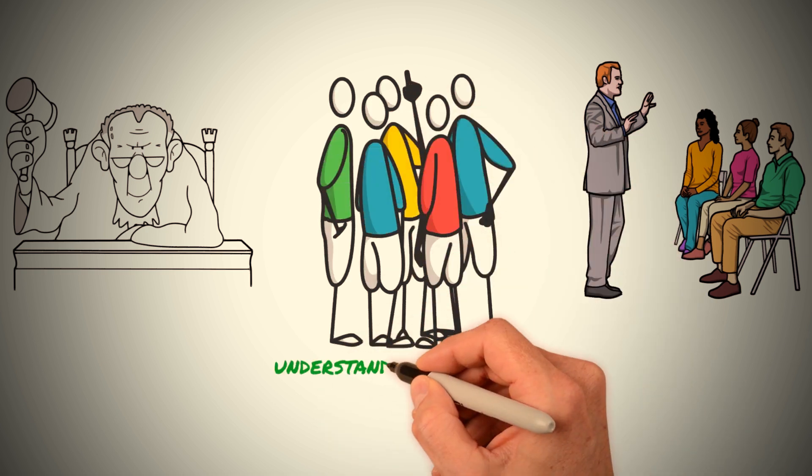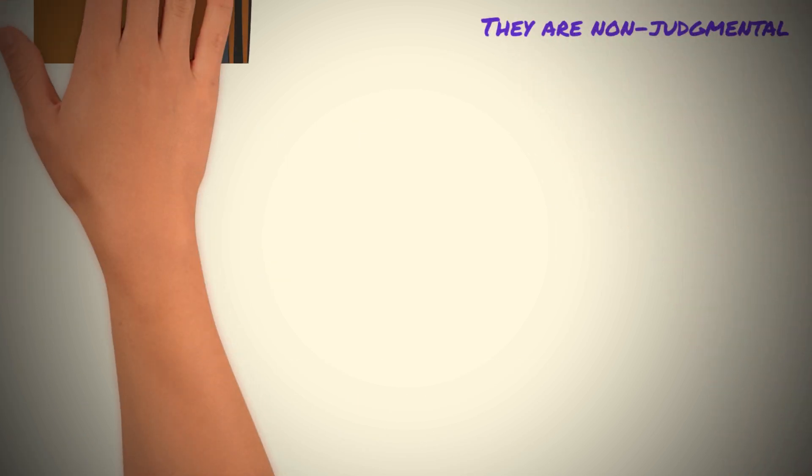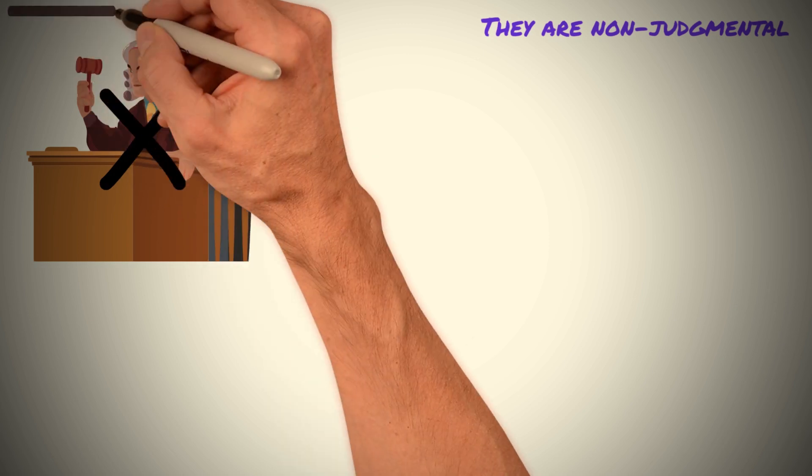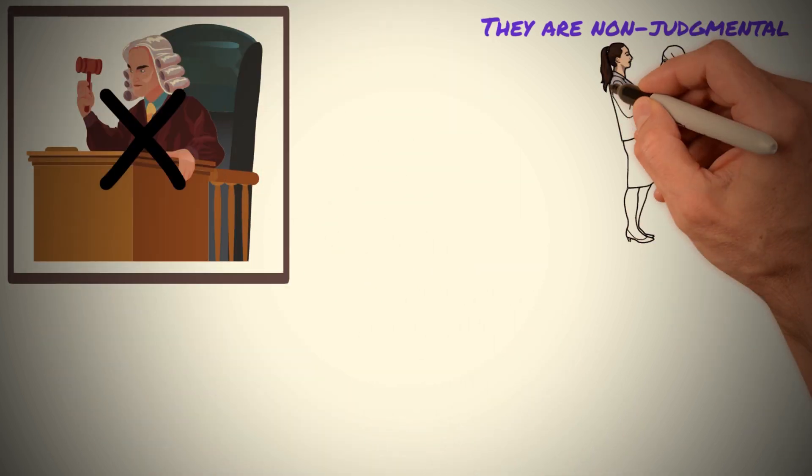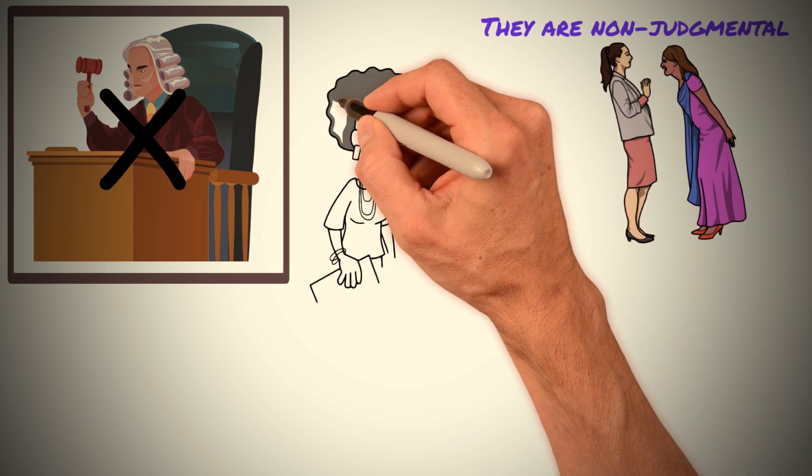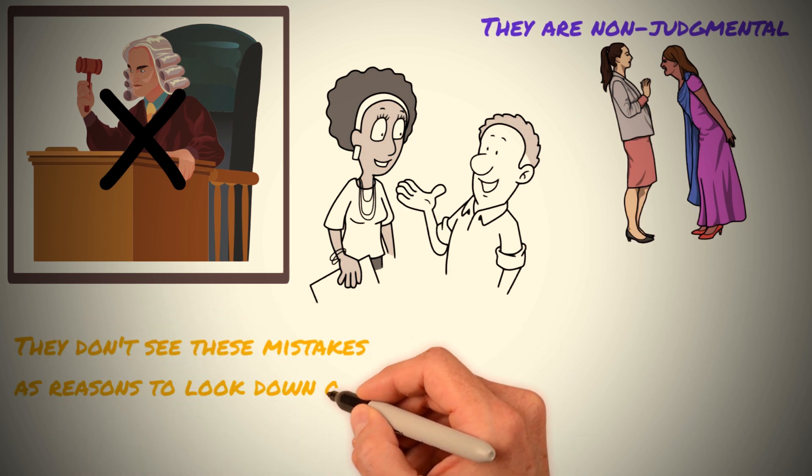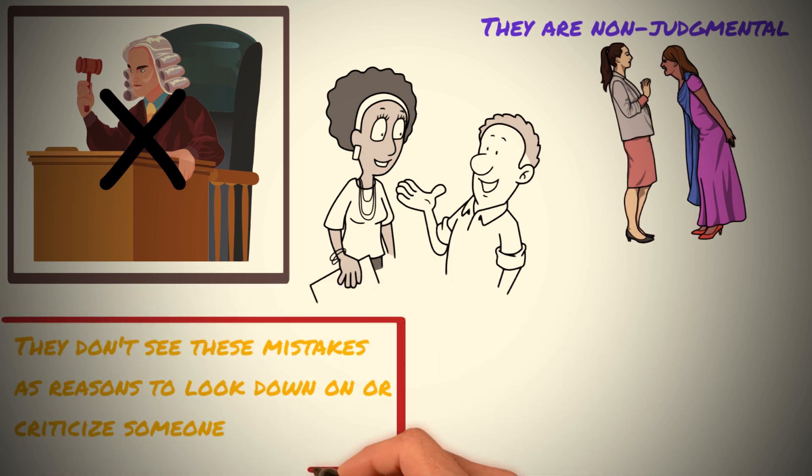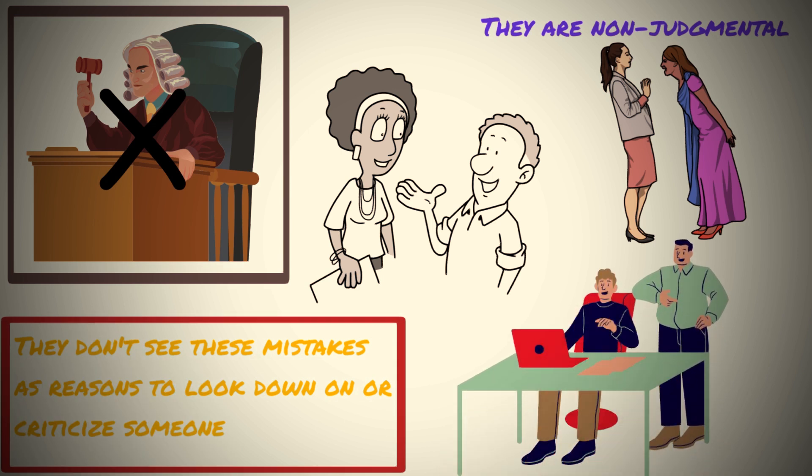They are non-judgmental. One of the ways Sigma males demonstrate respect is through their non-judgmental attitude. Unlike many people who tend to judge others based on their mistakes or shortcomings, Sigma males understand that everyone is human and therefore make mistakes from time to time. They don't see these mistakes as reasons to look down on or criticize someone.